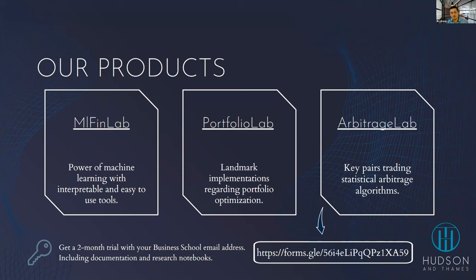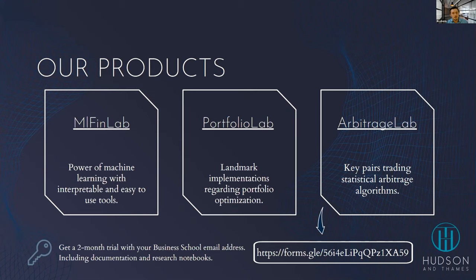What are our products at Hudson and Thames? We have three main labs, which are all Python packages. You'll need basic Python skills — importing data sets or running basic functions. We currently have three packages: MlfinLab, PortfolioLab, and ArbitrageLab. The first two are open to use and can be installed via PyPI with pip install. They are production-level algorithms — deeply tested, with full code coverage, unit tests, great documentation, and research notebooks you can run and tweak.